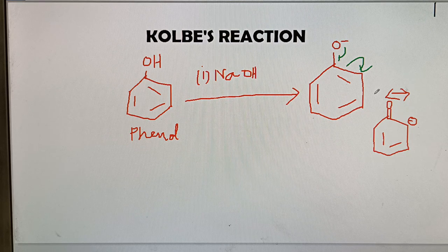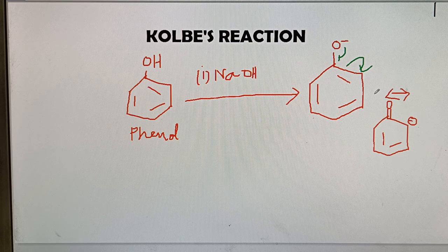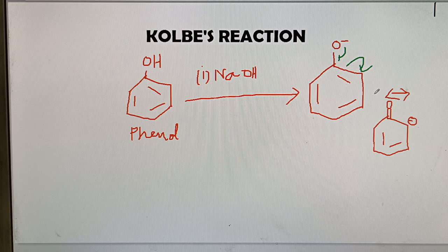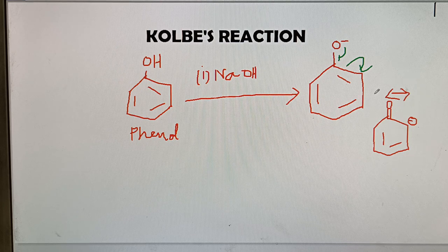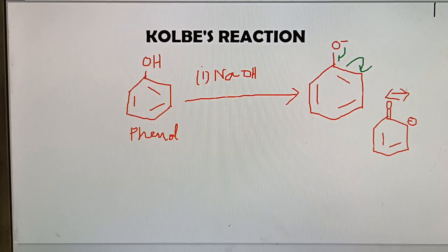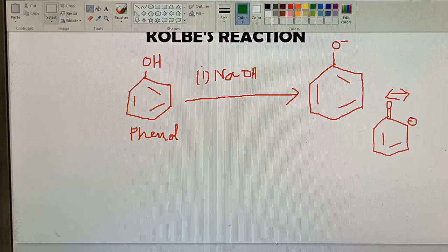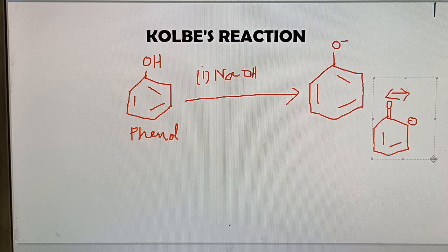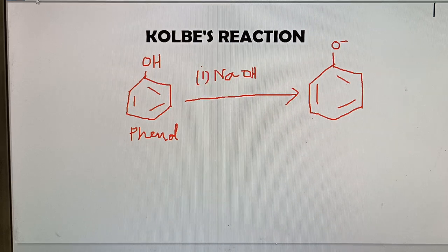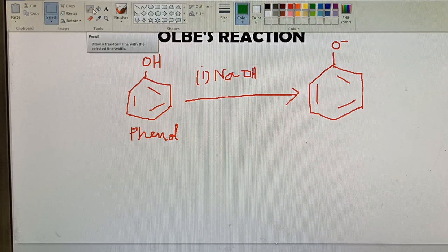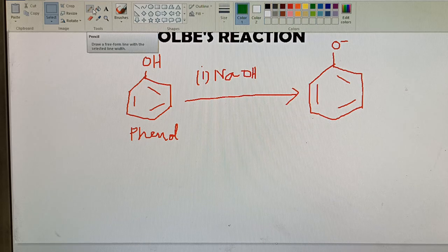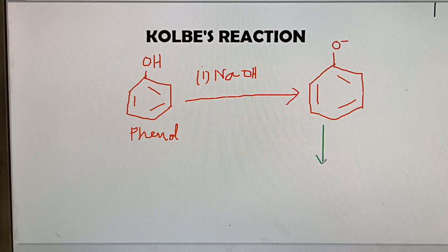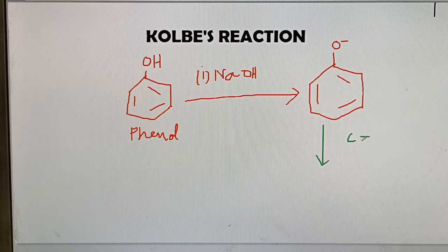Otherwise, it may not be formed. As it is a stable intermediate, that is why it is formed. Next, the phenoxide ion acts as nucleophile and it will attack the carbon dioxide, which is a weak electrophile.